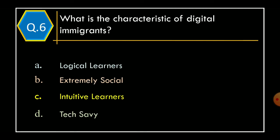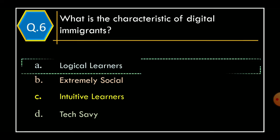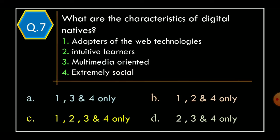Question 6: What is the characteristic of digital immigrants? Option A: Logical learners. Option B: Extremely social. Option C: Intuitive learners. Option D: Tech savvy. The correct option is Option A: Logical learners.